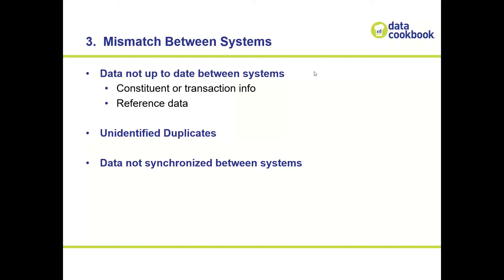The mismatch between systems means data is not up to date between systems — constituent or transaction info doesn't match, contact information differs for the same person, financial transactions aren't synchronized, or reference data codes added in one system aren't in the other or aren't properly mapped. Unidentified duplicates occur when someone was imported into one system but not the other and they're actually the same person. Data may simply not be synchronized to the level and frequency required.